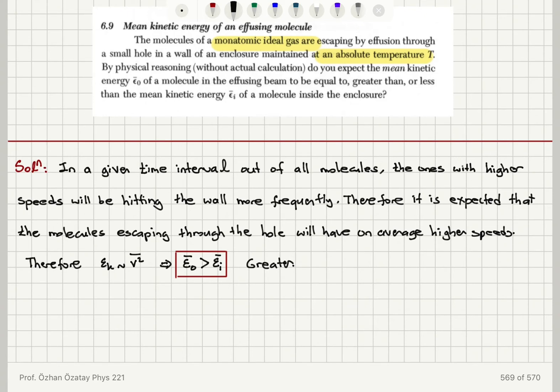Now in the effusion process we're not disturbing the equilibrium inside the container because the diameter of our hole is much less than the mean free path, and therefore molecules can escape through the hole without additional collisions.